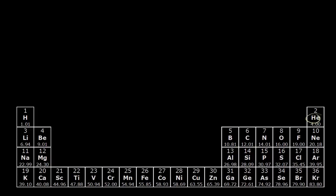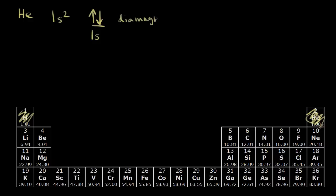Let's start with helium. The electron configuration for helium is 1s2, meaning two electrons in the 1s orbital. Those two electrons must be spin-paired, so all electrons are completely paired. That means helium atoms are diamagnetic.